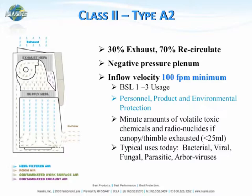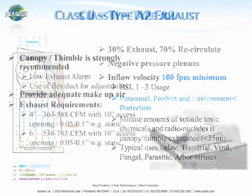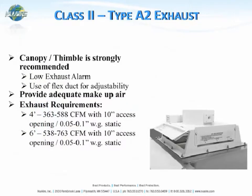An A2 cabinet gives you the ability to recirculate back into the room, which is very common. But if you are using some volatile toxic chemicals, you can exhaust to the outside. Exhaustion through an A2 cabinet is done by a canopy or thimble transition, and this is designed with a low airflow alarm. If the exhaust system has low airflow and is not able to exhaust the air to the outside, it will go into alarm to let users know that proper airflow is not being achieved.